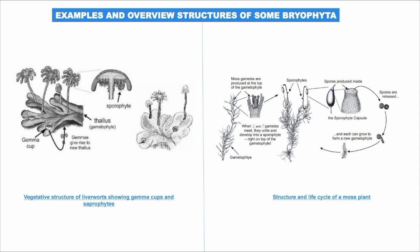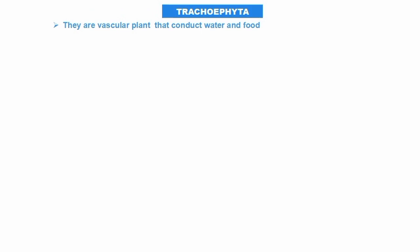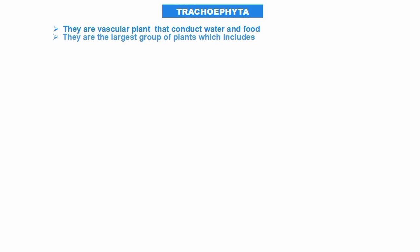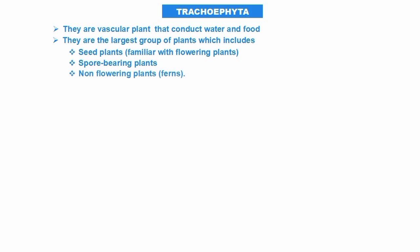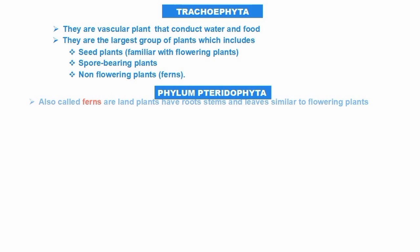Now let's move to phylum Tracheophyta. Tracheophyta are vascular plants that transport water and food through a conducting system — vascular bundles. They are the largest group of plants and include: seed plants such as familiar flowering plants, spore-bearing plants, and non-flowering plants.